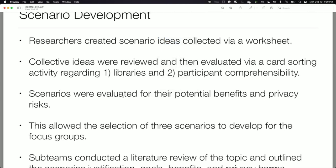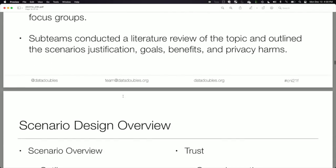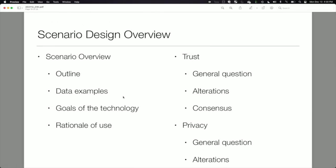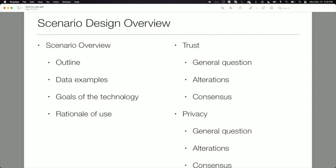The sub-teams conducted literature reviews and outlined all ideas for each scenario. When designing scenarios to present to students, we wrote an outline describing what the technology would do, examples of data to be used, the goals of the technology, what the institution was trying to accomplish, and the rationale for use. This began the focus group portion: we asked how students felt about trust as it related to the scenario.